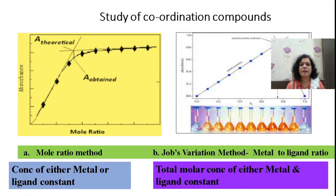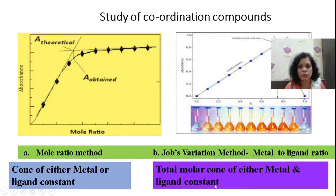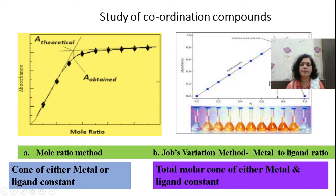In Job's variation method, again the metal-to-ligand ratio is varied while the total concentration of either metal or ligand is kept constant, in order to find out the number of moles required to form a complex. We are going to see this application in today's experiment.